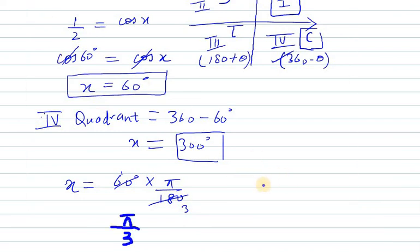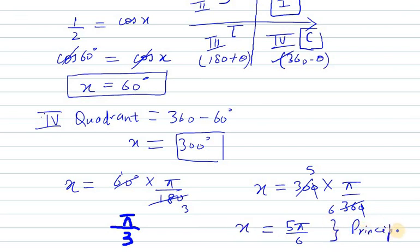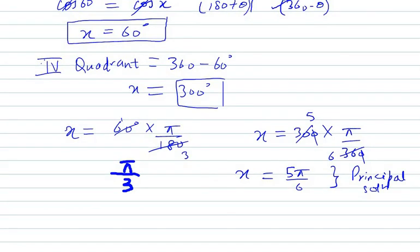Now the other value will be x equals 300 times pi over 180 degrees. When we cancel the values we get 5 pi over 3. So 5 pi over 3 is the principal solution for sec x equals 2. So x equals pi by 3 and 5 pi over 3.